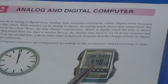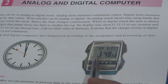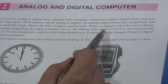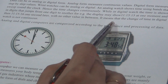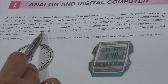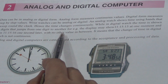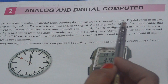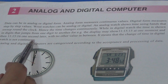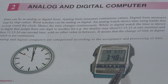Lekin agar aap Digital watch dekhenge, to time digits form mein hota hai, that jump from one digit to another. Aur ye ek digit se doosre digit mein jump karta hai. For example, the display may show a value at one moment, and then one second later it jumps. Agar ek minute guzar jata hai to wo jump kar jata hai — with no other value in between. It means that the change of time in a Digital watch is not continuous; balke jumping ho rahi hai time ki.